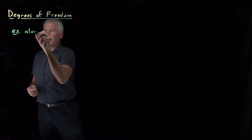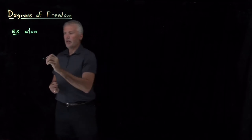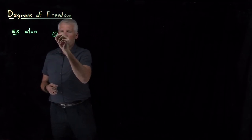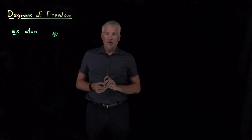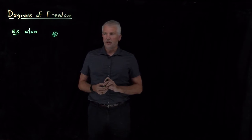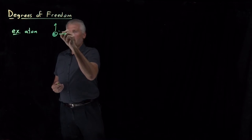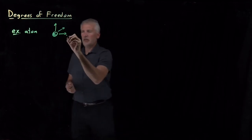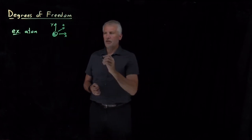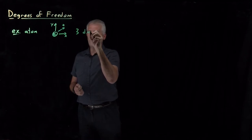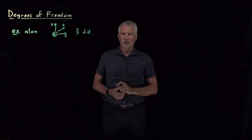Consider a single atom — a monatomic molecule, like a single helium atom. When describing the position of that atom, how many different variables can I choose independently? I can change its x-coordinate, its y-coordinate, and its z-coordinate simultaneously. Changing one of those doesn't prevent me from changing any of the others. So we'd say that molecule has three degrees of freedom — three variables I can change independently to describe its position.